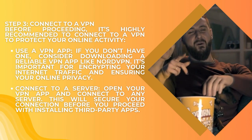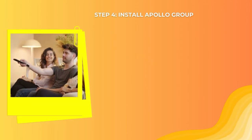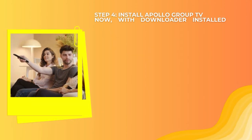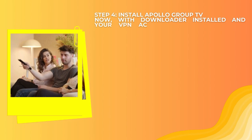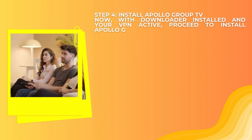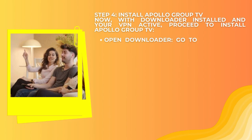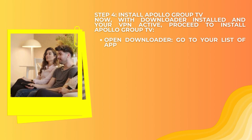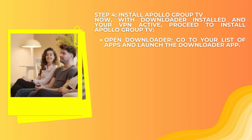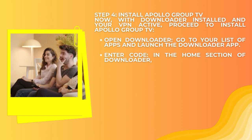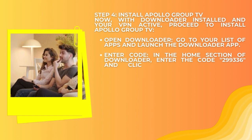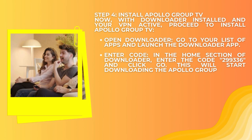Step 4: Install Apollo Group TV. Now with Downloader installed and your VPN active, proceed to install Apollo Group TV. Open Downloader from your list of apps. In the home section of Downloader, enter the code 299336 and click Go. This will start downloading the Apollo Group TV APK.